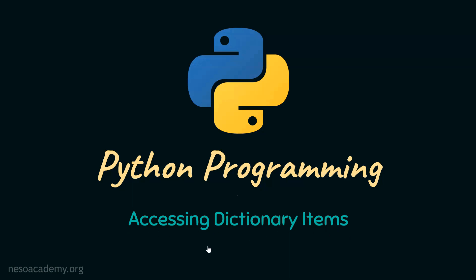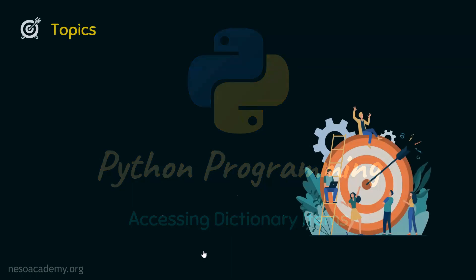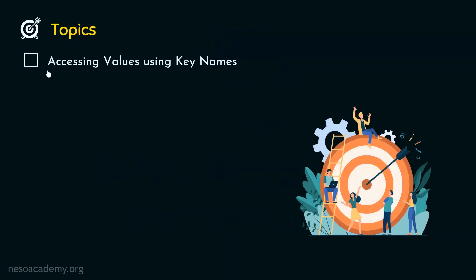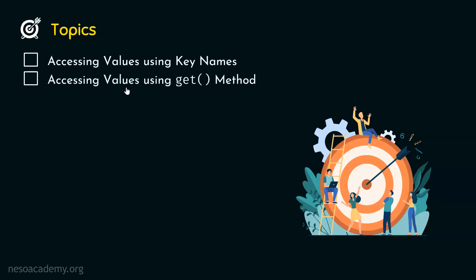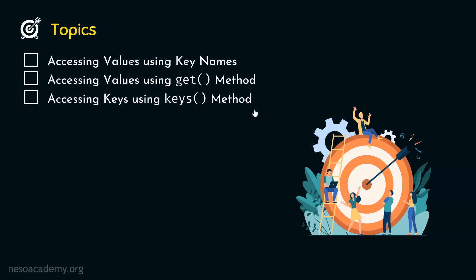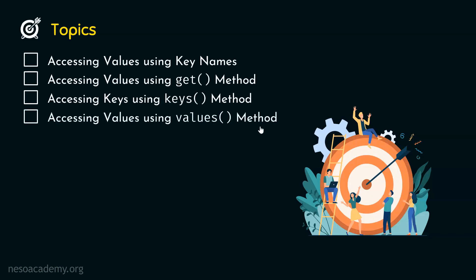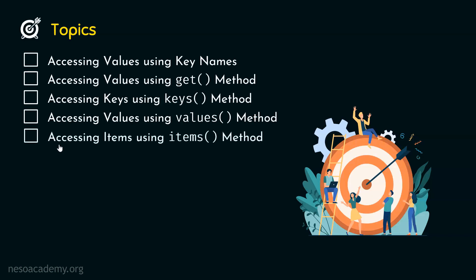Let's get started with this presentation and see all the topics. The first topic is accessing values using key names. The second topic is accessing values using the get method. The third topic is accessing keys using the keys method. The fourth topic is accessing values using the values method. And the fifth topic is accessing items using the items method.